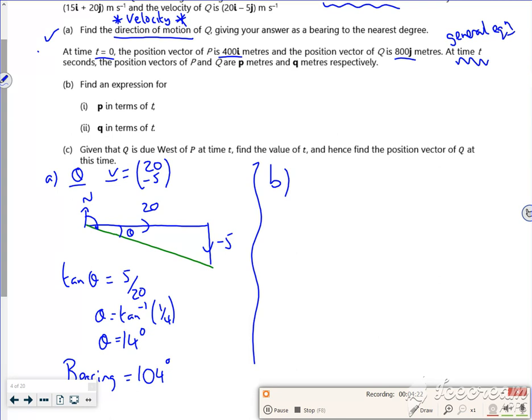Right then, so let's have a look. So for P, R is, so remember it was R naught, which was (400, 0). So R naught, (400, 0).